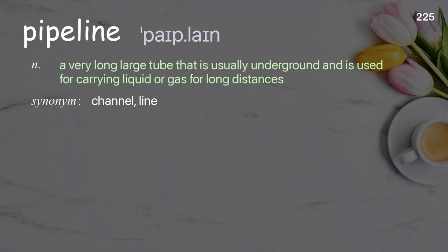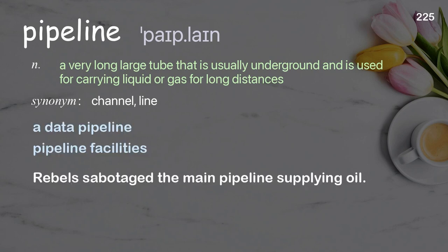Pipeline: a very long large tube that is usually underground and is used for carrying liquid or gas for long distances. Examples: a data pipeline; pipeline facilities. Rebels sabotaged the main pipeline supplying oil.